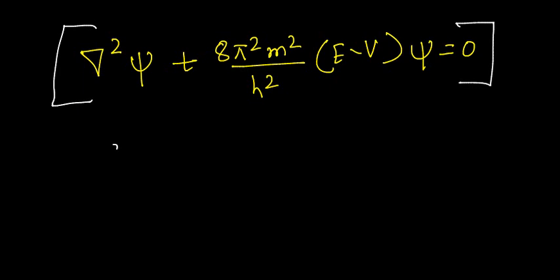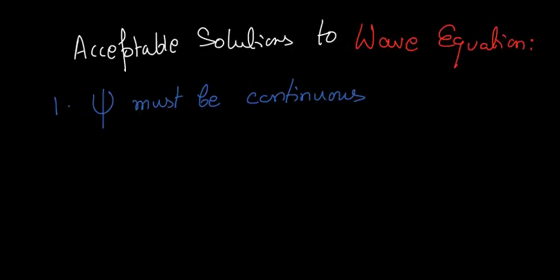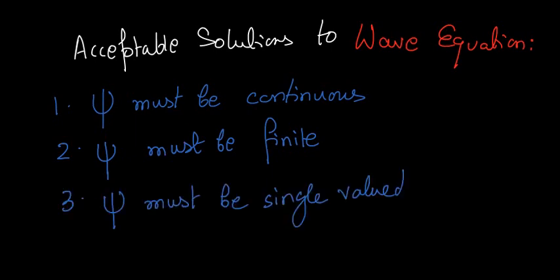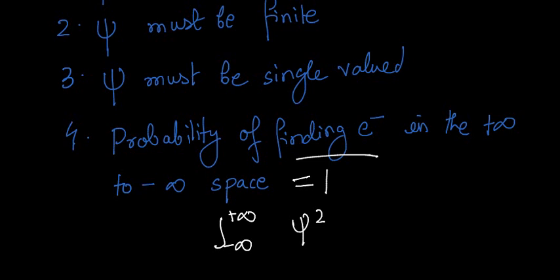This is a very famous equation — this is nothing but Schrödinger's equation. From this, the acceptable solutions to a wave equation require that: first, ψ must be continuous; second, ψ must be finite; third, ψ must be single-valued. And lastly, the probability of finding the electron across all space must equal 1, that is, the integration from minus infinity to plus infinity of ψ² dx dy dz must equal 1.